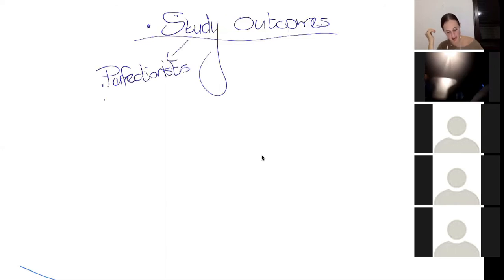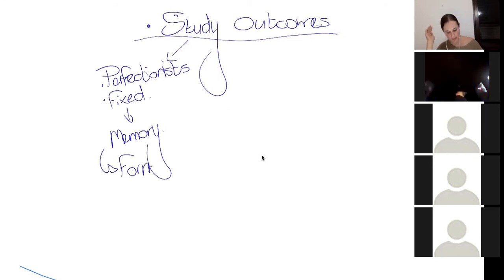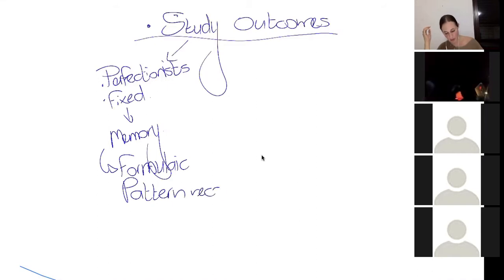Perfectionists, fixed mindsets, most of us have pretty good memories. Our memory retention is really good. It's also kind of natural, doing well with maths and science at school and accounting at school. We're very good at formulaic thinking. Not so much numbers per se, but formulaic thinking. We're really good at pattern recognition. If this, then that. If this, then that.